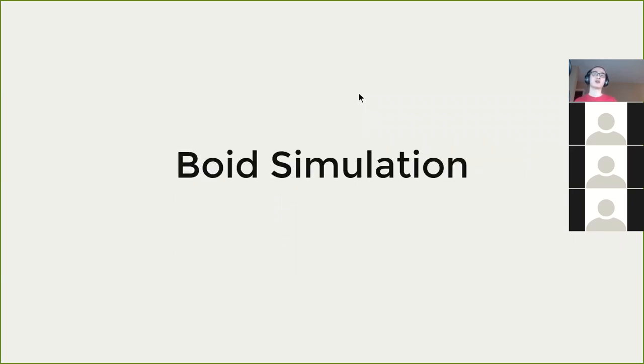So what is boid simulation? A boid is basically a little agent that moves by itself. And when we have a lot of boids, they form a flock and move in some interesting patterns. There are three rules of boid that often have some conflict with each other that cause boids to move in interesting patterns.